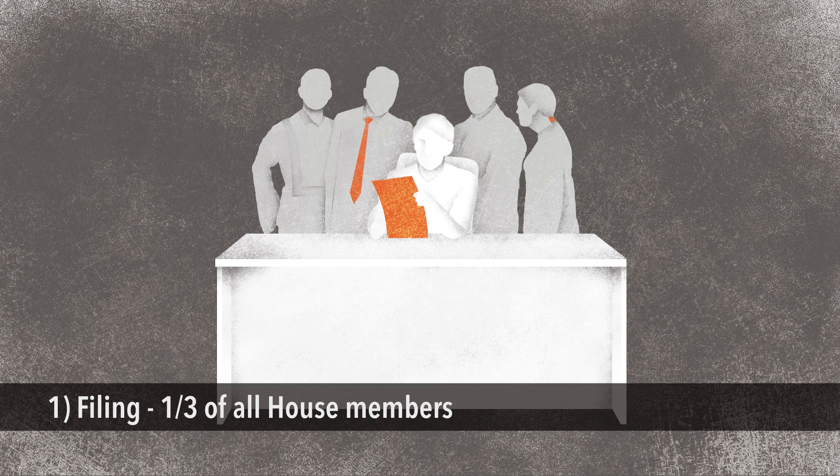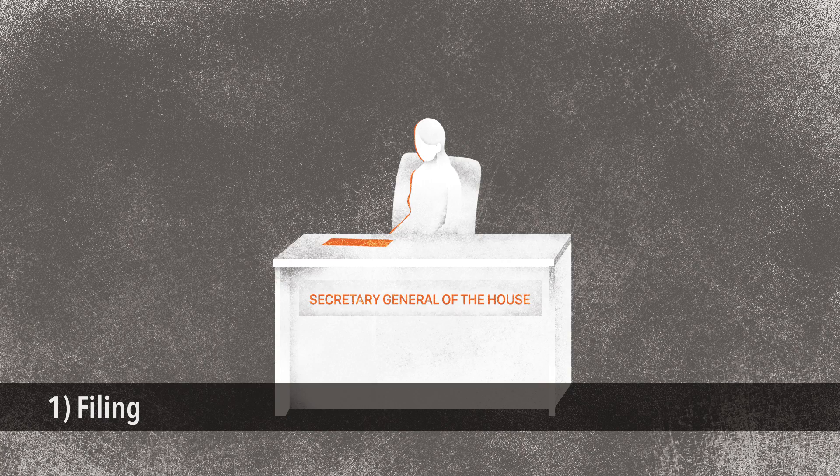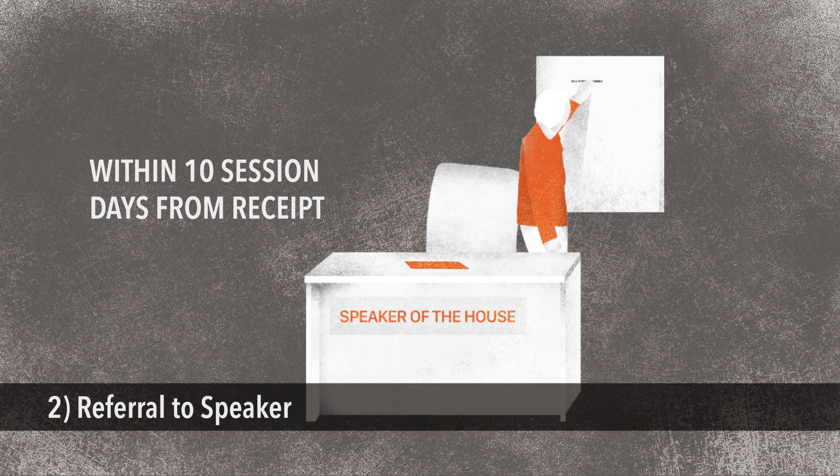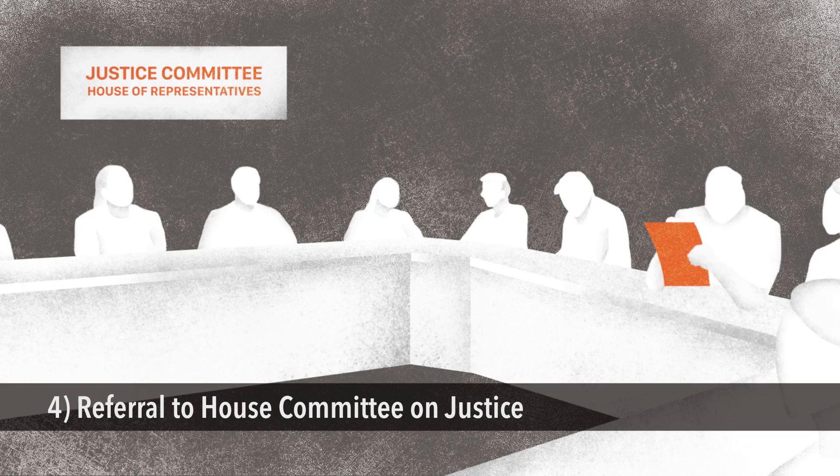The impeachment process starts at the House of Representatives, where a complaint should be filed. Any congressman or at least one-third of all House members can initiate an impeachment complaint. Any citizen may also file a complaint, which should be endorsed by a House member. The complaint should be filed with the Office of the Secretary General of the House, which would then be referred to the Speaker. Within ten session days from receipt, the Speaker should include the complaint in the House's order of business. Within three session days after inclusion, the complaint should be referred to the House Committee on Justice.